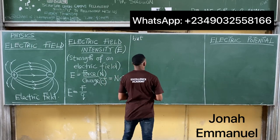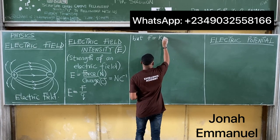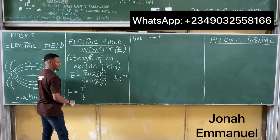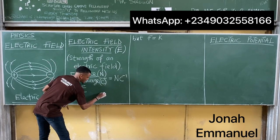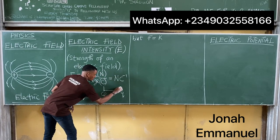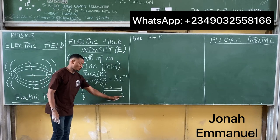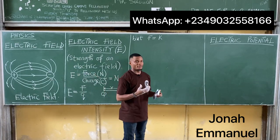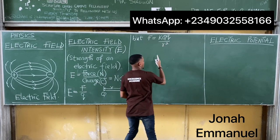From Coulomb's law, we say force F is equal to K times the charges over distance squared. Now, with a positive test charge — let's call the source charge capital Q and the test charge small q — we can say the force of attraction becomes K·Q·q all over R squared, from Coulomb's law.